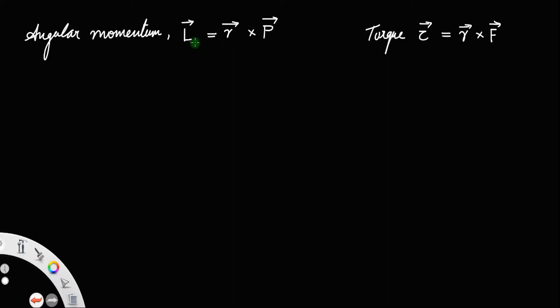So if you derive this expression L equal to R cross P, that is dL divided by dt, the derivative of angular momentum with respect to time, that is d by dt of R cross P.